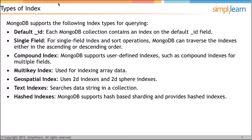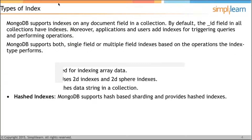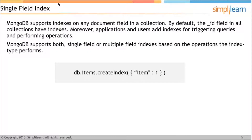Then we have text indexes, which search data strings in a collection. We also have hashed indexes — MongoDB supports hash-based indexes and provides hashed indexes. Moving to the next slide, we will see every type of index in detail, starting with the single field index.